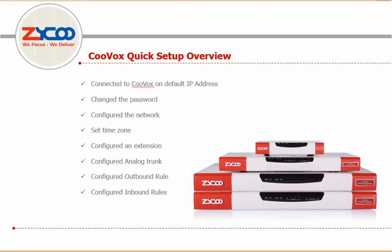To summarize how we achieved this: first, we connected to the Kuvox on its default IP address. We changed the password for security reasons. We reconfigured the network settings to match our needs. We set the time zone. We created an extension. We configured an analog trunk to connect the Kuvox to the PSTN. We configured an outbound rule to allow us to make calls over the PSTN. And finally, we configured inbound rules to control inward calls.